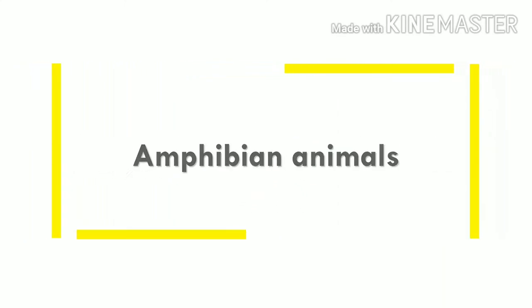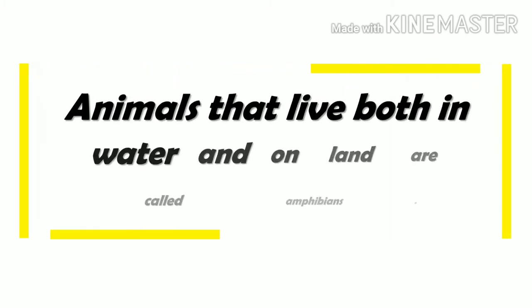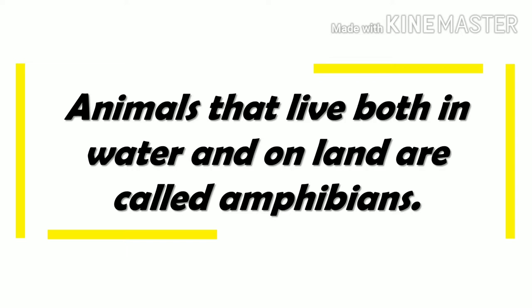Amphibian animals. Animals that live both in water and on land are called amphibians. In order to live on land, amphibians replaced gills with another respiratory organ — the lung. Other adaptations include skin that prevents loss of water, eyelids that allow them to adapt vision outside of water, an eardrum developed to separate the external ear from the middle ear, and a tail that disappears in adulthood.